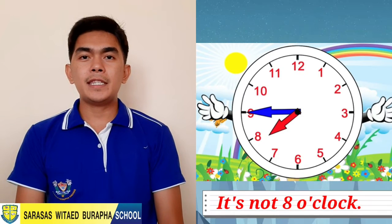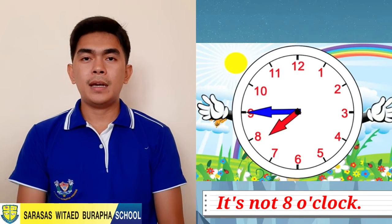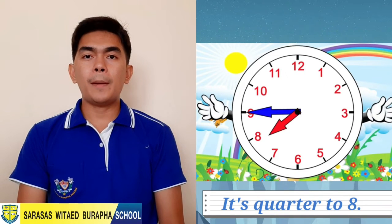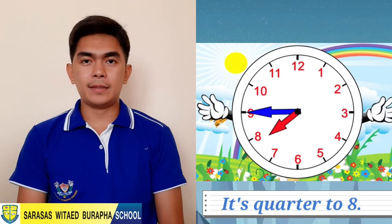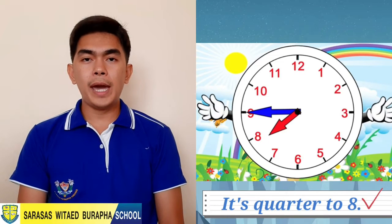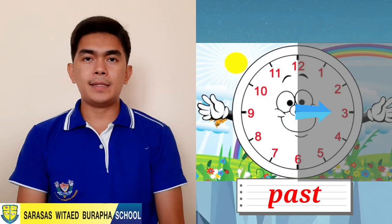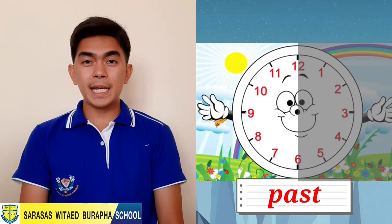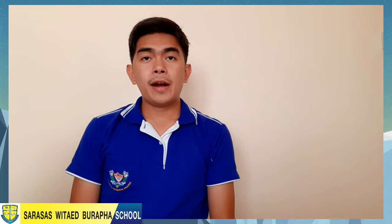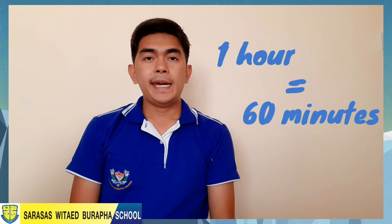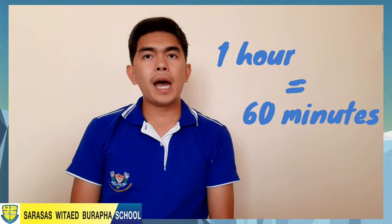Now this one is tricky. It's not eight o'clock yet — it's a quarter before eight, or quarter to eight. Remember: when the minute hand is pointing on this side, we use the word 'past.' When the minute hand is pointing on this side, we use the word 'to.'